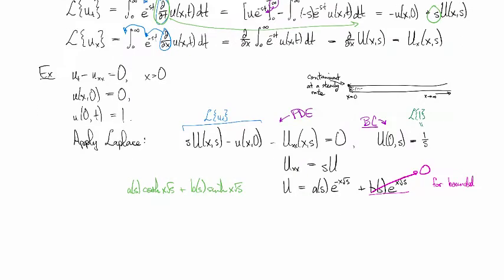Okay. And then we need to figure out what a(s) is. So we use the boundary condition and we evaluate both sides of this equation when x equals zero and we get one over s equals a(s) e to the zero. So a(s) is one over s. And we know now that our U is one over s e to the minus x root s.